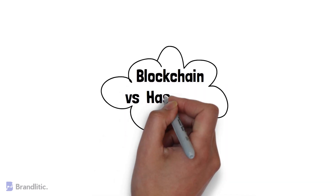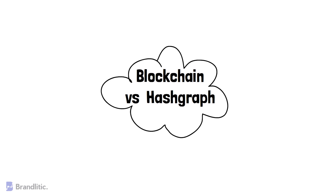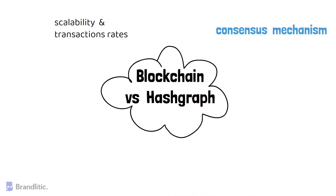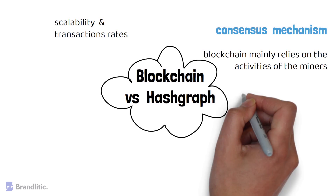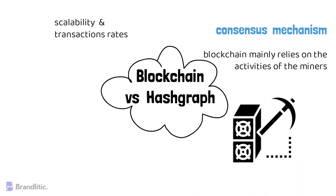Now let's understand the differences between these DLTs. First, blockchain versus hashgraph. Hashgraph differs from blockchain in quite fundamental ways — it is a direct response to blockchain's limitations like scalability and transaction rates. Blockchain mainly relies on miners to facilitate transactions, meaning a single miner can greatly affect transaction success. It relies on proof of work to verify transactions, making transaction rates slow and expensive, and placing a huge computational burden on the network.